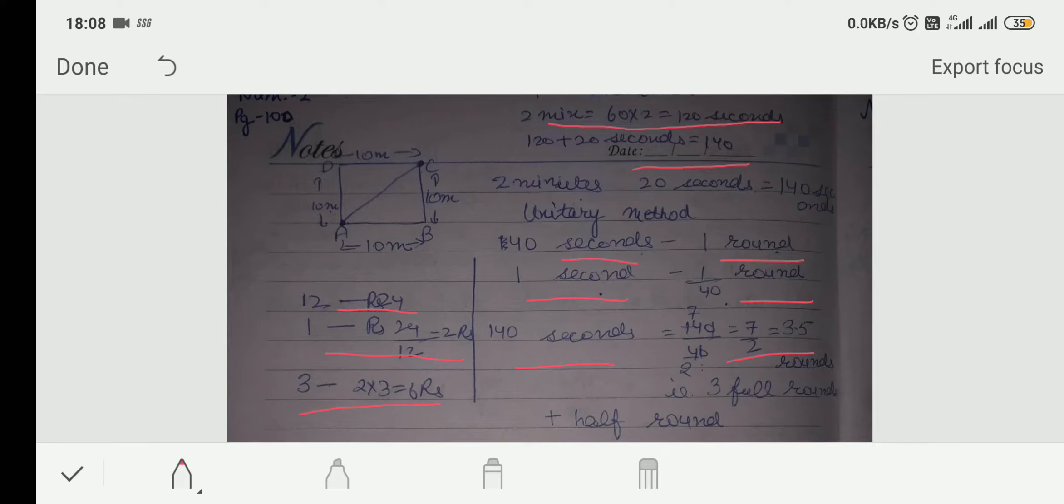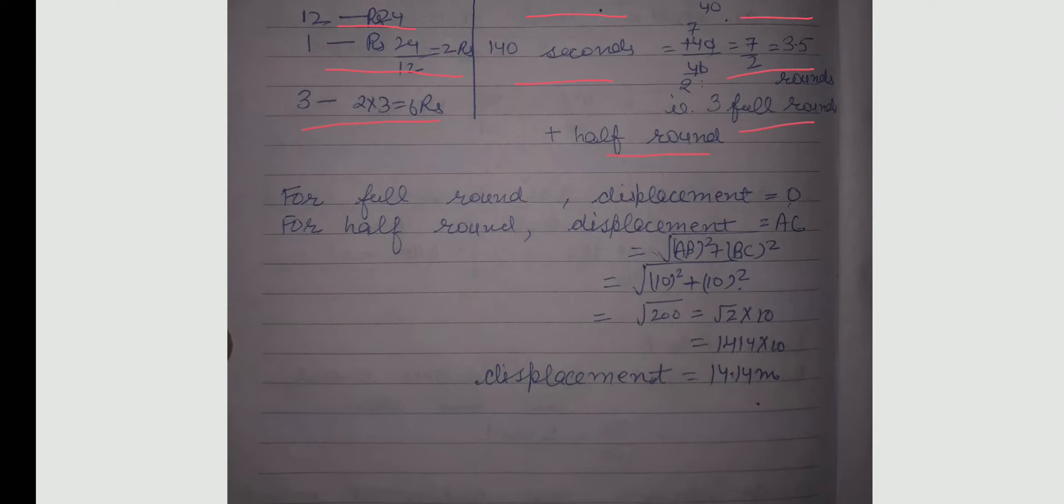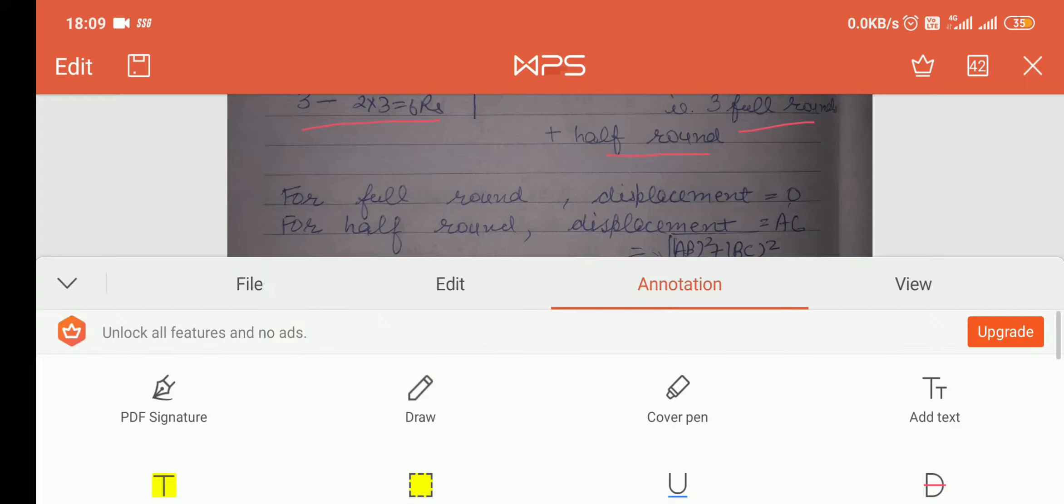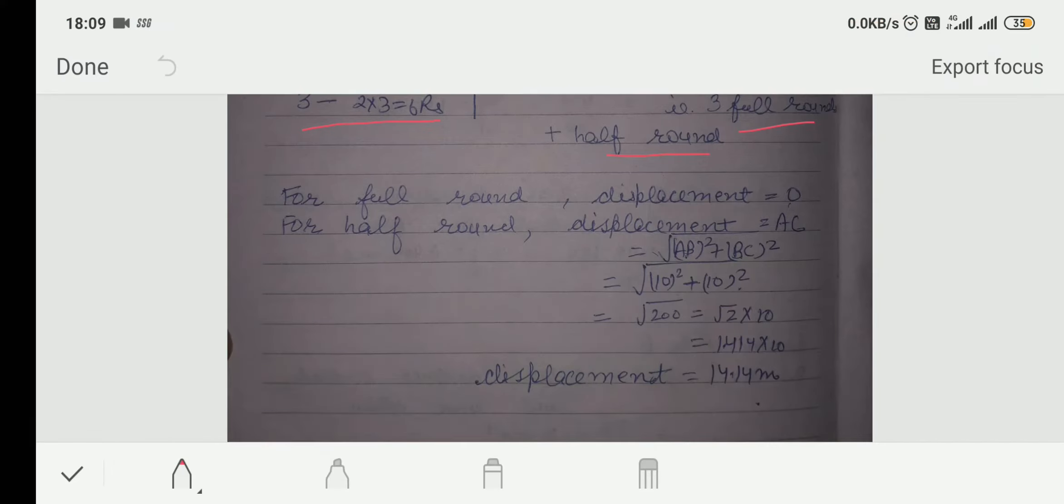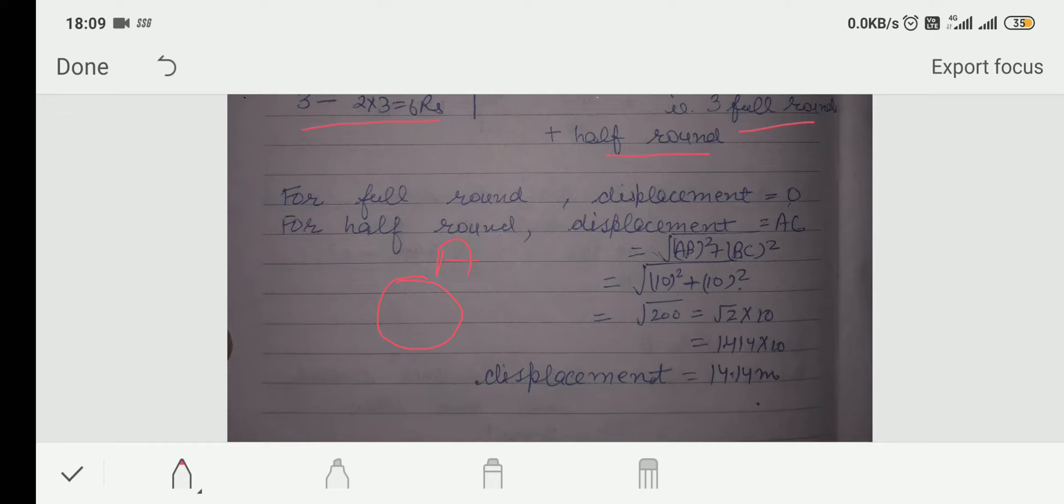3.5 rounds means 3 full rounds and half rounds. For full rounds, displacement will be 0. As I have discussed in last video, that for full circle, the displacement is 0. Because, final and initial points coincides.